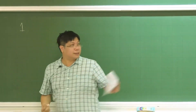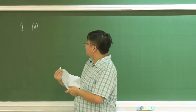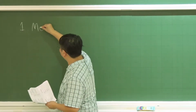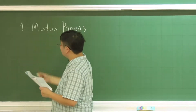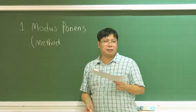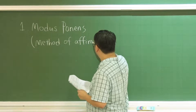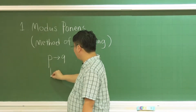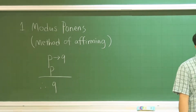The first inference rule is called modus ponens. Modus means method, and ponens means affirming something to be correct. The form is: P implies Q, and P is true, therefore Q is the conclusion. We use it every day — for example, if it rains, I take a ride to school.